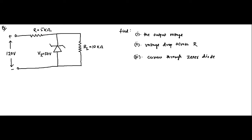Here we have a zener diode circuit. The zener diode is connected in reverse bias mode — the positive side of the 120V input is connected to the n-end and the negative side to the p-end, which is the normal reverse bias configuration. The zener voltage, or breakdown voltage, is given as 50 volts, meaning the zener diode will activate when the voltage across its terminals is greater than or equal to 50V.